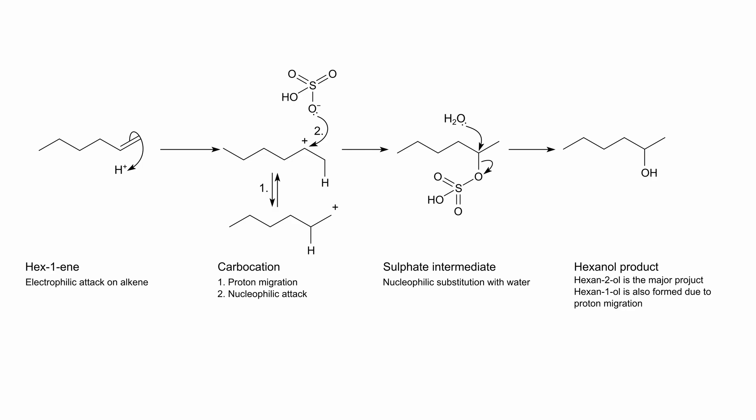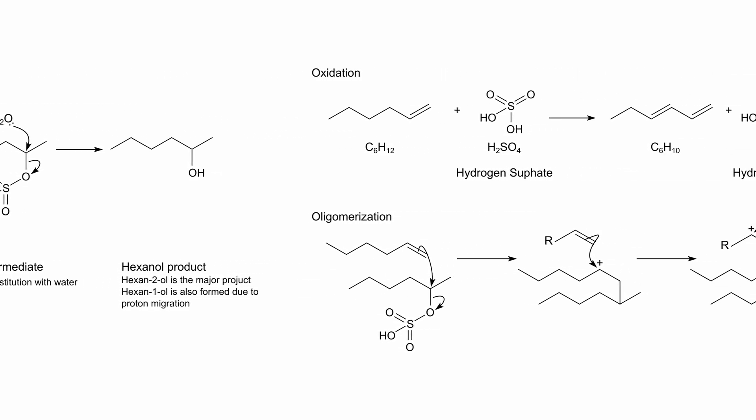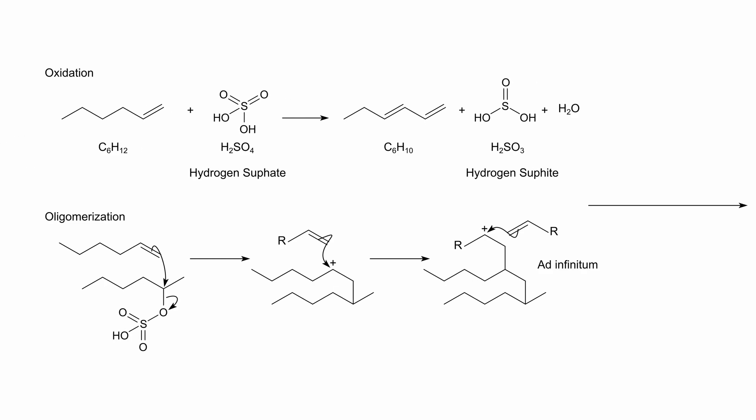Without the presence of water the concentration of the sulfates and the hexene is increased and the lack of water also allows for competing side reactions to occur. With the high concentration and probably quite high temperature due to the lack of water, we get oxidation occurring where hydrogen sulfates or sulfate ions can be reduced to hydrogen sulfites or even sulfur dioxide. This oxidizes our hydrocarbons increasing the number of double bonds as you can see in C6H10 there are two double bonds as opposed to the starting one.